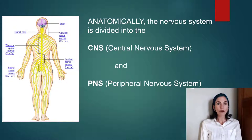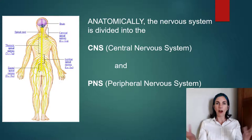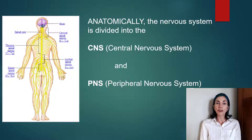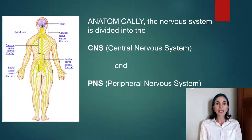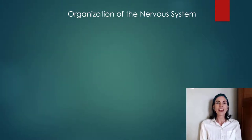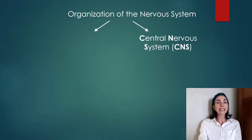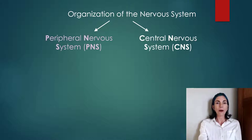The phrase peripheral nervous system is based on the idea of periphery, meaning on the outside. We have the center and then everything else on the outside, which is the peripheral nervous system. Now we are going to look at an organizational flowchart that breaks down the nervous system. I encourage you to get out a pen or pencil and take notes. The nervous system is broken up into the central nervous system, abbreviated CNS, and the peripheral nervous system, abbreviated PNS.